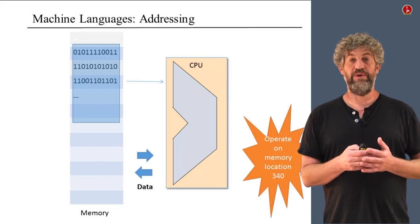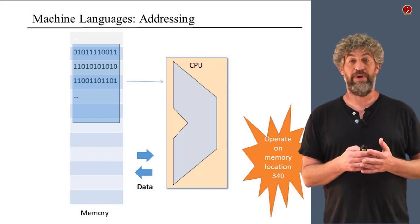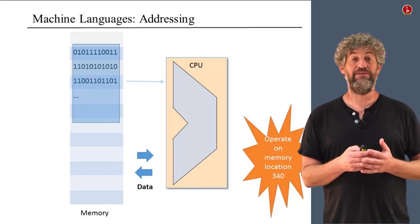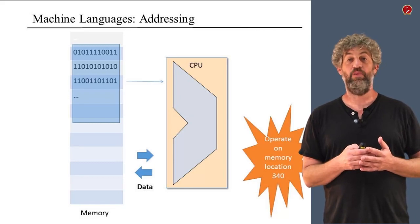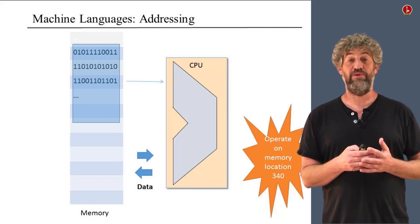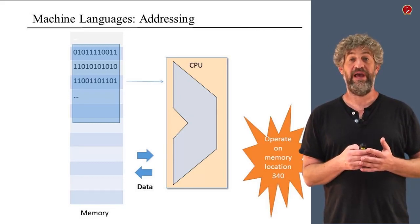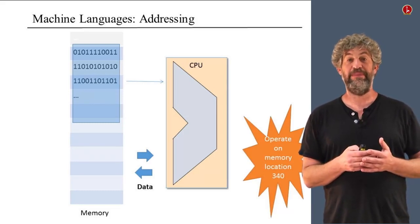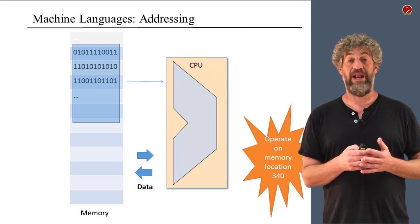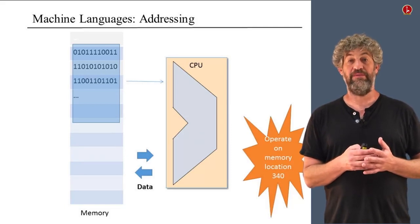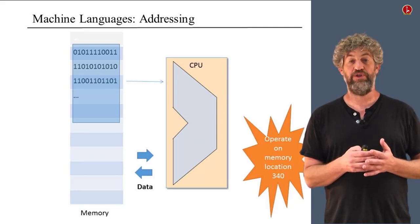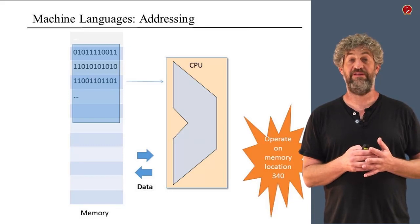The third element, which is really important, is that we're going to have to tell the hardware what to operate on. Even if the hardware knows it needs to add two numbers, the software has to tell the hardware where exactly will it get these two values that it needs to add, and where should it put the result. So these are the three basic elements that every machine language, every way that the hardware allows the software to tell it what to do, needs to specify.